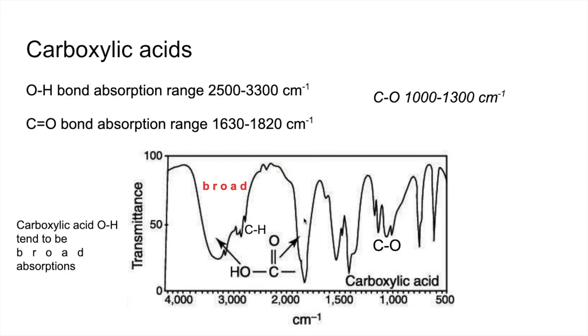The C double bond O absorption occurs around about 1700. I always just remember that figure. It's always very strong so it kind of almost touches the bottom. It's not particularly broad, nowhere near as broad as that, so it's a sort of sharp strong absorption and due to the C double bond O. So for carboxylic acids they're the two key bits of evidence from a spectrum.